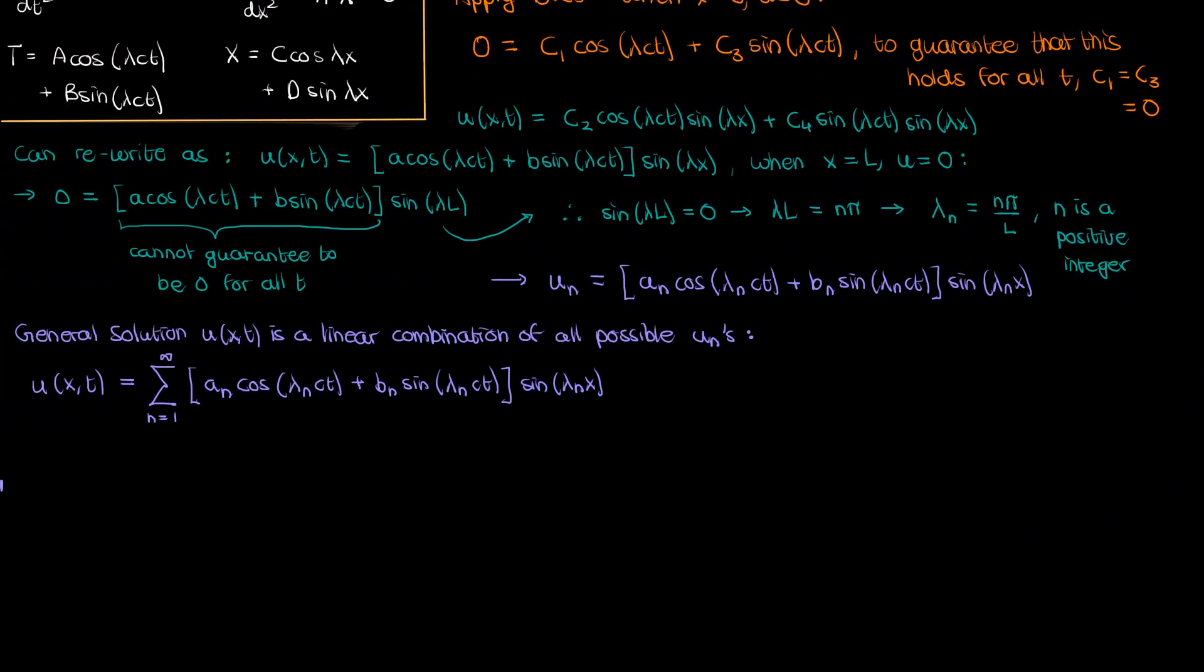Anyway let's go back to our PDE solution and let's go apply the initial conditions. The first initial condition states that when t is zero u is u0 of x. The cosine of zero is one and the sine of zero is zero so that means u0 of x equals the following summation.